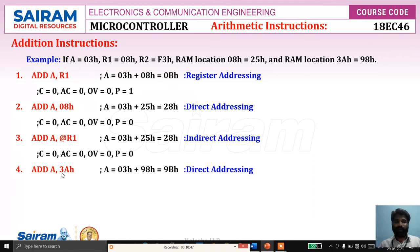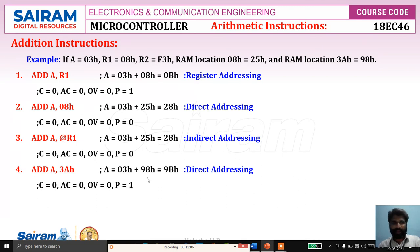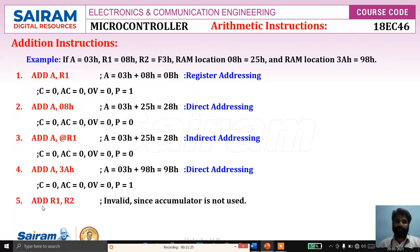For ADD A, 3AH: 3AH is a memory address — direct addressing mode. Location 3AH contains 98H. So it performs addition of 98H plus content of A (03H): 03H plus 98H equals 9BH. Flags: C = 0, auxiliary carry = 0, overflow = 0, parity = 1 because 9H has 2 ones and BH has 3 ones, totalling 5 ones — odd parity, so parity flag = 1. Note that an instruction like ADD R1, 2 is invalid because the addition instruction must contain A as the destination.